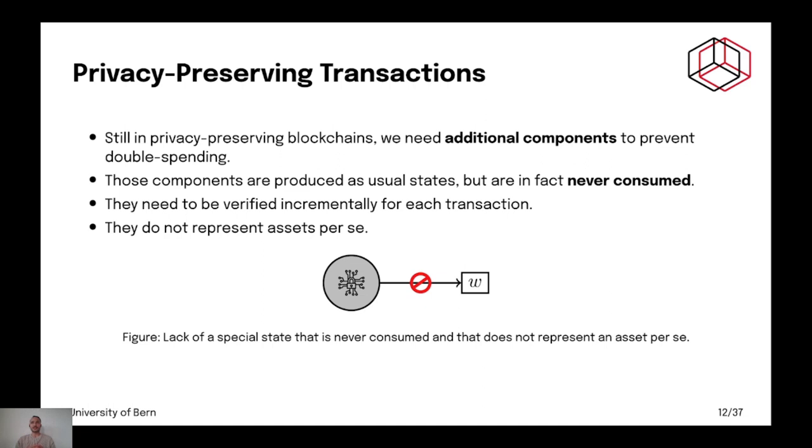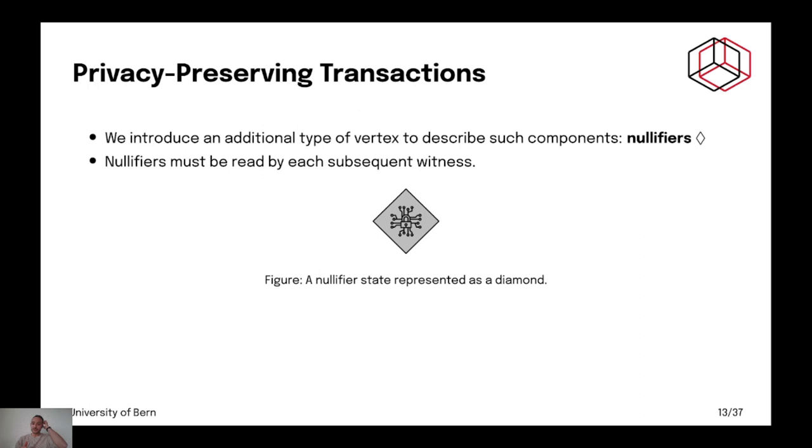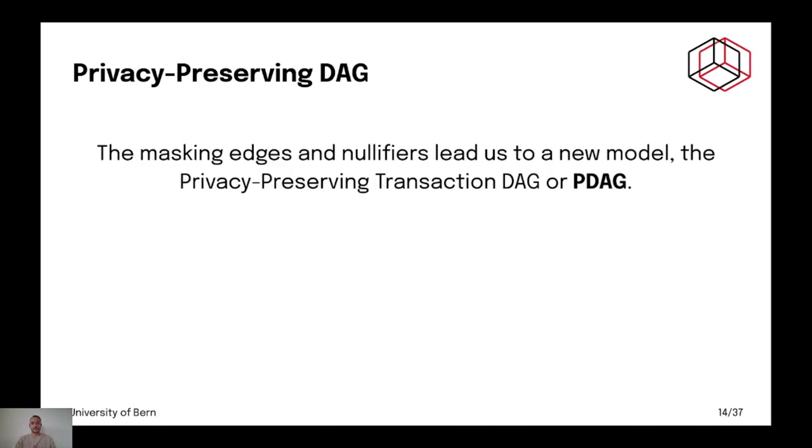Now, when you don't see the state consumption, you must account for double spending still. And most privacy preserving cryptocurrencies have what they call nullifiers or key images respectively for Zcash and Monero. And we actually model them with a diamond and without loss of generality, we call them nullifiers. Now, the masking edges and the nullifiers with the elements of the TDAG create the PDAG.